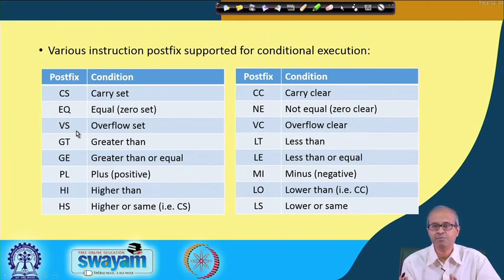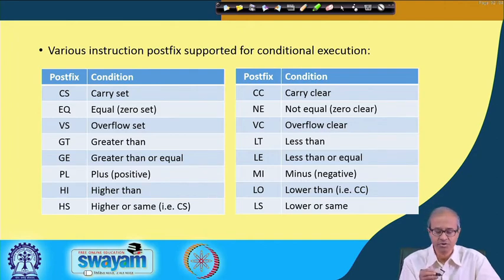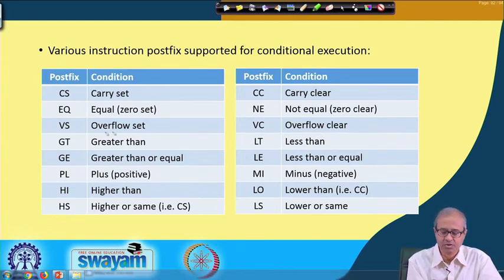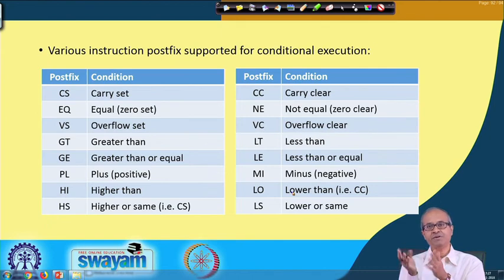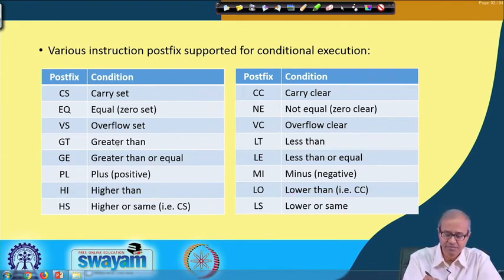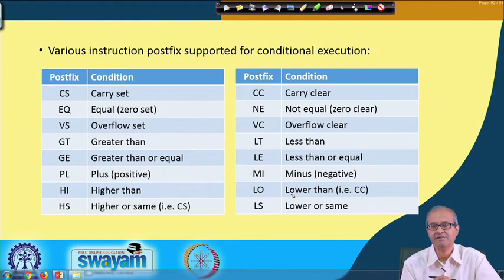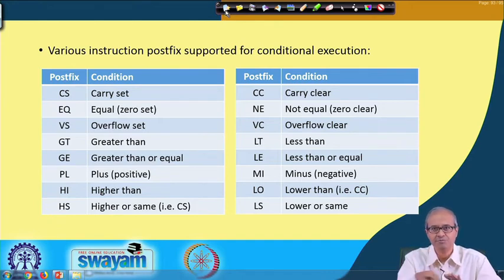The various instruction condition postfixes available include: not equal, carry set, equal, overflow set, greater than, greater or equal, plus, higher or same, and many more — 16 conditions in total. Along with any instruction you can specify a condition, and the instruction executes only if that condition is valid. Since there are 16 conditions, 4 bits are reserved in the instruction encoding to specify the condition.